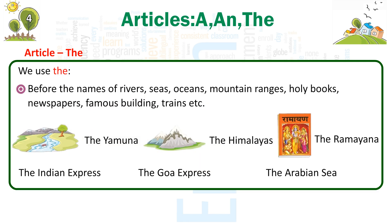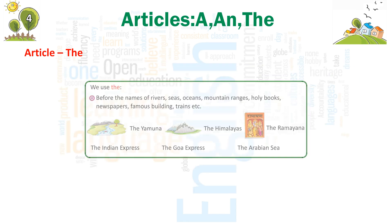We use THE before the names of rivers, seas, oceans, mountain ranges, holy books, newspapers, famous buildings, trains, etc. Examples: The Yamuna, the Himalayas, the Ramayana, the Indian Express, the Goa Express, the Arabian Sea.